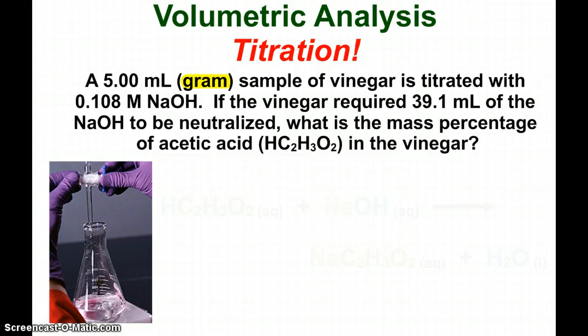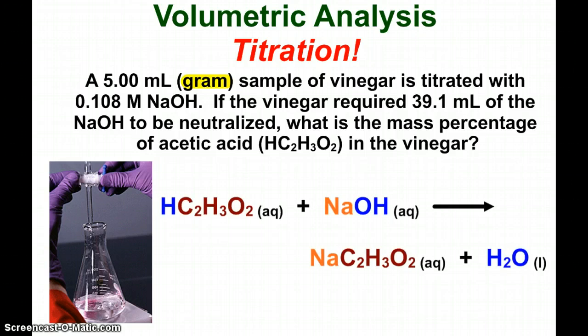So in order to figure out the mass percentage, the first thing we need to do is know what the balanced equation is. And so here we see acetic acid is going to be neutralized with the sodium hydroxide making our salt, sodium acetate and water. And the first thing we notice is that it is a 1 to 1 molar ratio acid to base, so that'll be important.